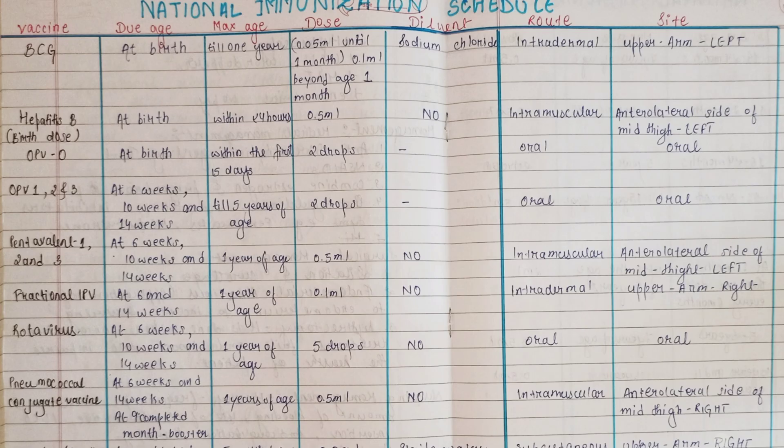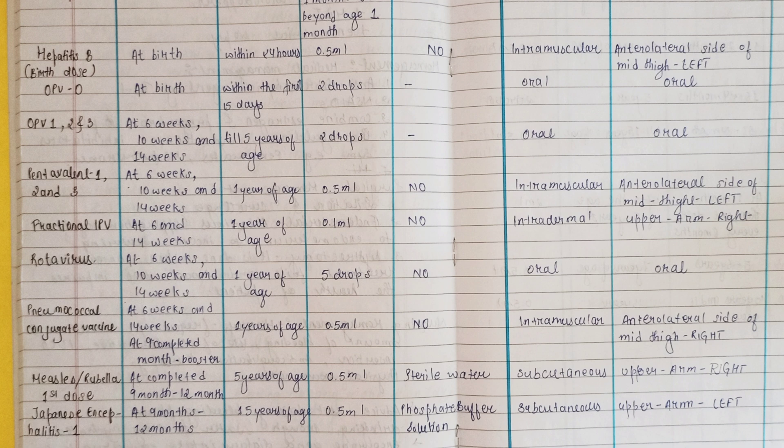The first vaccine is BCG, which is given at birth. If missed at birth, it can be given till one year. The dose is 0.5 ml until one month; if the baby is beyond one month, it will be given 0.1 ml. The vaccine is diluted with sodium chloride, the route is intradermal, and the site is the upper left arm.